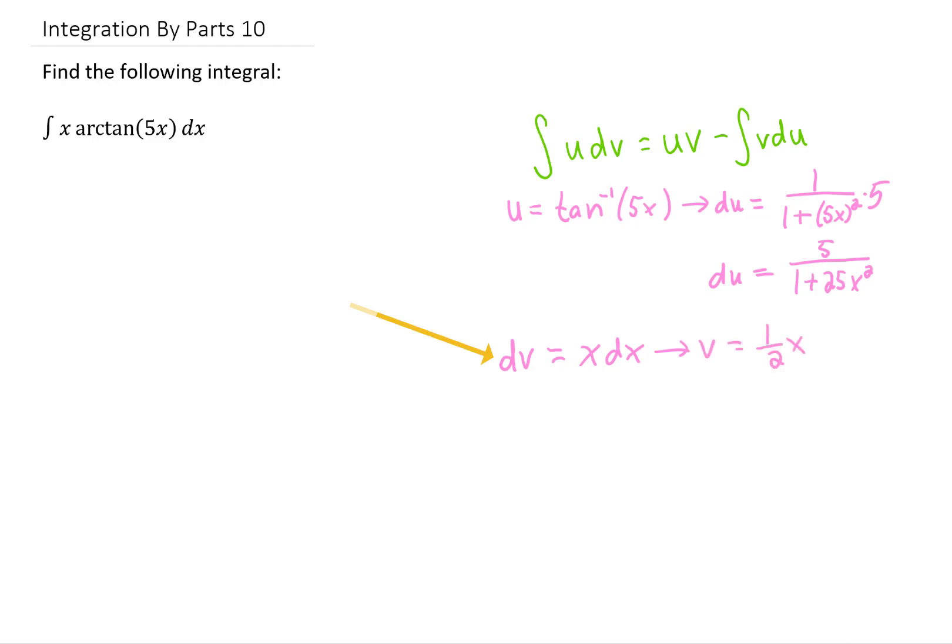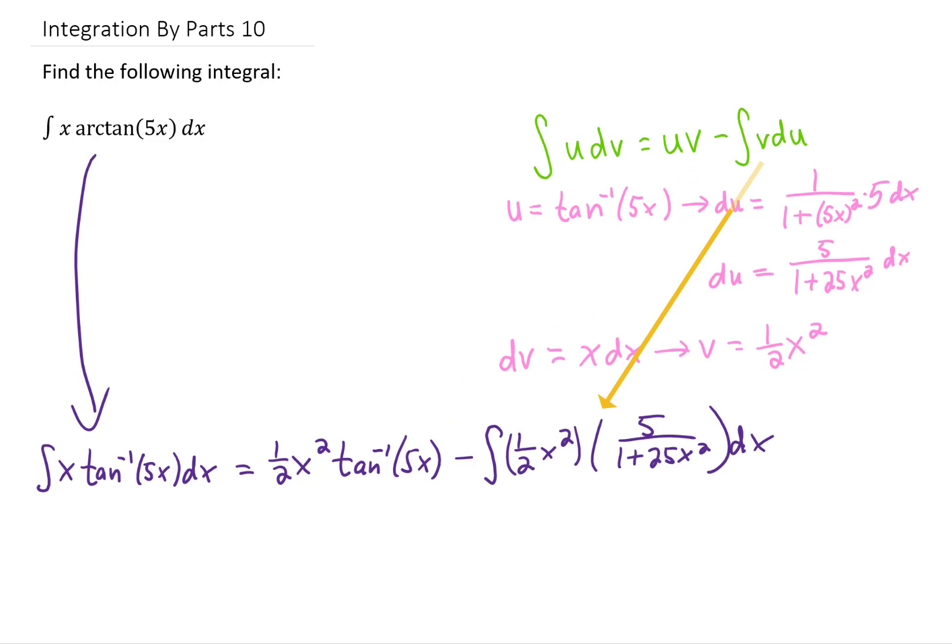Integrating that to get v gives us one-half x squared. Now, let's rewrite this integral using our integration by parts formula. u times v is going to give us one-half x squared times the inverse tangent, or arctangent, of 5x. Subtracting the integral of v du gives us this line right here.